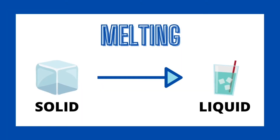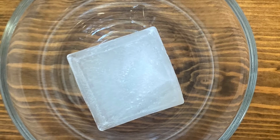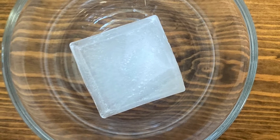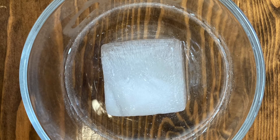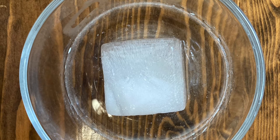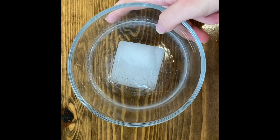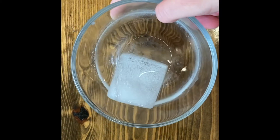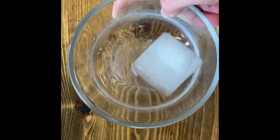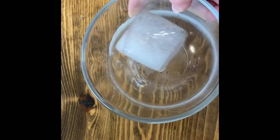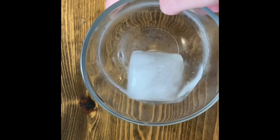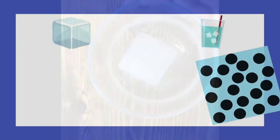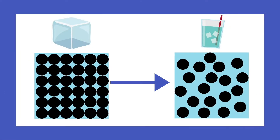Matter can change forms in many ways. We are going to start with melting. Melting is the phase change from solid to liquid. Look at this ice cube. I left it out on the table for a few hours and checked on it occasionally. Every time I came back to it, the ice cube had gotten smaller and the bowl was slowly filling up with water. But what caused this to happen? Heat. Melting occurs when the energy of a solid is increased due to the application of a heat source. The heat causes the solid's molecules to speed up and spread out, which then creates a liquid.